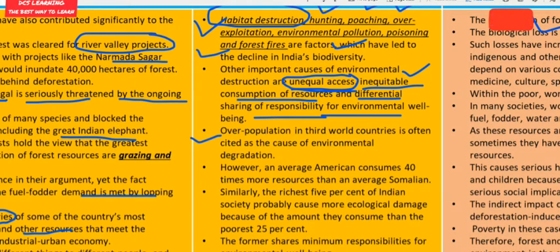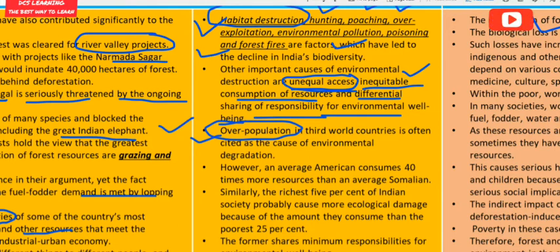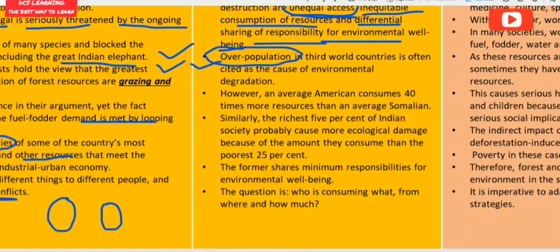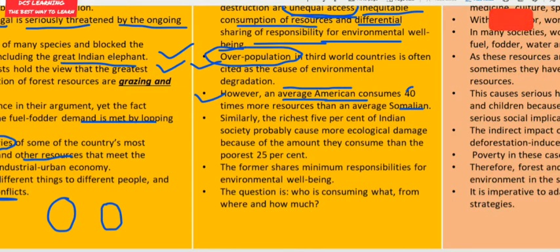As population increases, more land, buildings and infrastructure are needed, leading to more deforestation. However, an average American consumes 40 times more resources than an average Somalian, showing that overconsumption in developed countries is also a major factor. Similarly, the richest 5% of Indian society probably causes more ecological damage through its consumption than the poorest 25%.